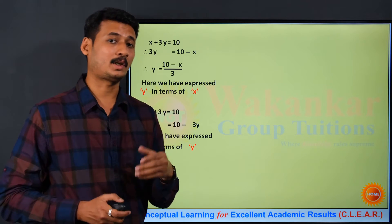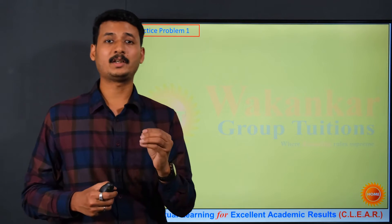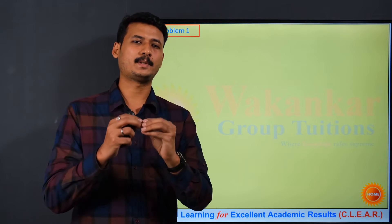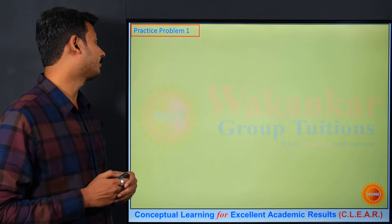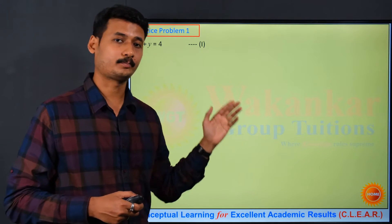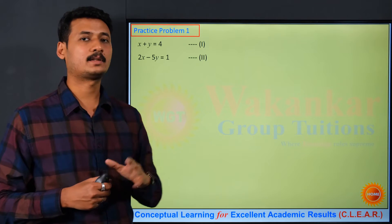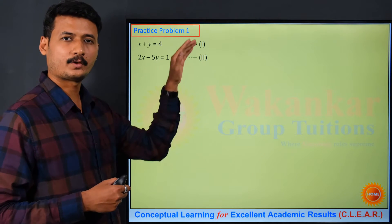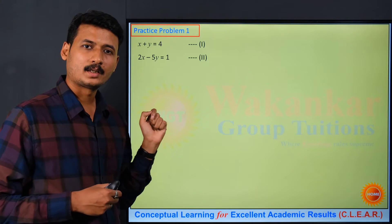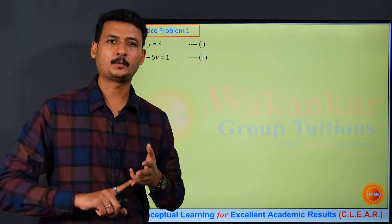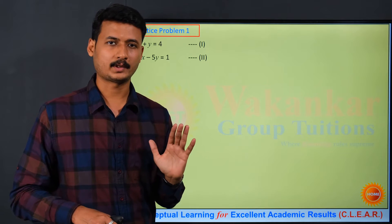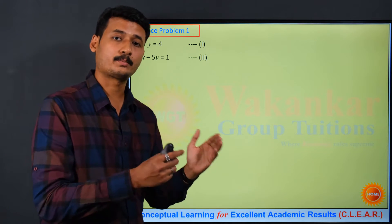Now let's understand substitution method with the help of 3 practice problems. The first practice problem is: x plus y equals 4 — that is the first equation — and 2x minus 5y equals 1 — that is our second equation. This is a pair of linear equations in two variables and we have to solve them by substitution method.